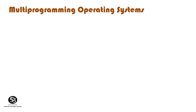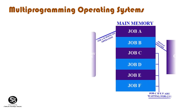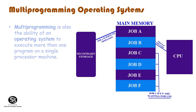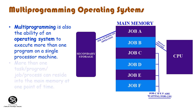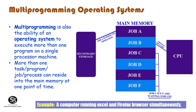Multi-Programming Operating System: Multi-programming is the ability of an operating system to execute more than one program on a single processor machine. More than one task, program, job, or process can reside in main memory at one point of time. Example: a computer running Excel and a Firefox browser simultaneously.